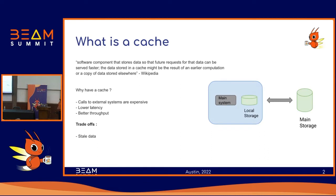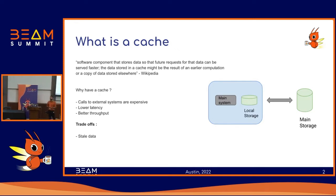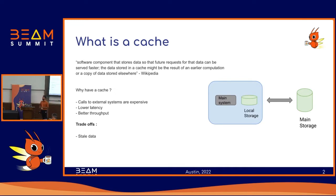A cache is essentially a copy of external data that's stored locally to your data pipelines. There are several reasons why you may want to do that. For example, you may want to avoid a lot of external calls to your main storage. There is added latency when you make a call to an external system, and your external systems may have limitations on how many calls they can serve. So it makes sense to have a local cache to avoid those expensive calls, giving you lower latency and higher throughput.